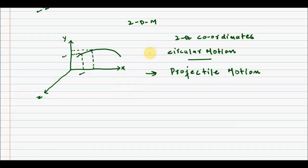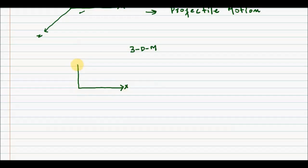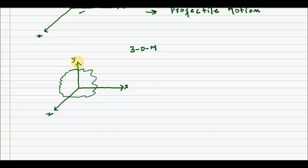Now let's talk about three dimensional motion. In three dimensional motion, all three coordinates — x, y, and z — are changing simultaneously with time. In other words, the object is moving freely in space. The motion of a plane is an example of three dimensional motion, as it can move anywhere in space.